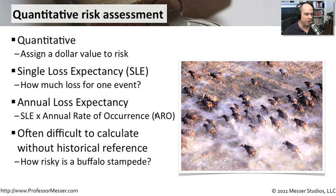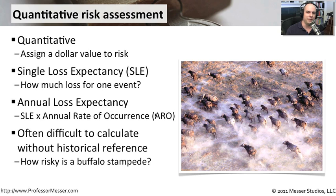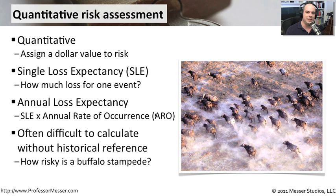You also have to think about the historical reference — how often did this occur in the past? This is very easy for things like understanding how many times we've lost the mail server over the last year. But there are things you just can't plan well for. In this particular case — a buffalo stampede — you're not going to calculate an annual loss expectancy of a buffalo stampede if you happen to be in Florida. So you run into situations where sometimes you can't exactly put a dollar figure on things because there's no reference and no way to determine if this is something that might have occurred in the past or might even occur in the future.